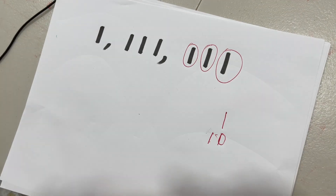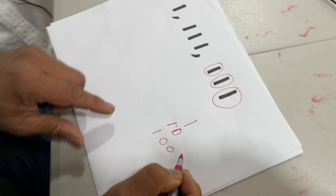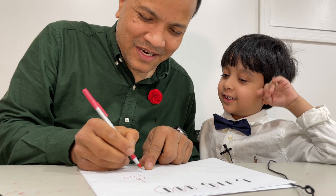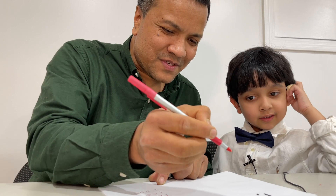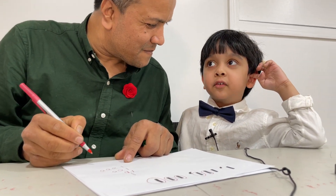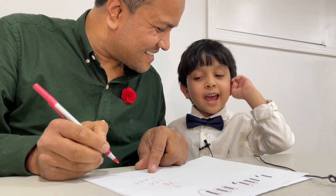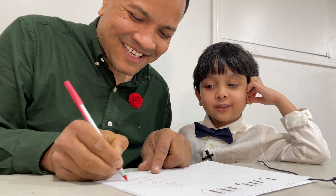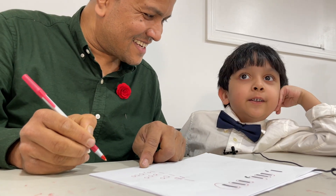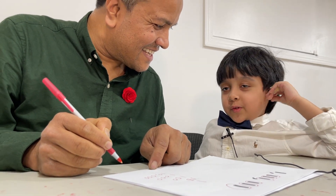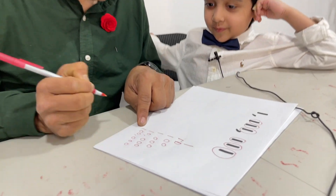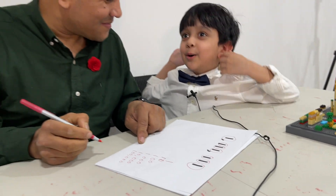What is the value of this one? One thousand. What is the value of this one? Ten thousand. Just ten thousand. What is the value of this one? One hundred thousand. And what is the value of this one? One million.